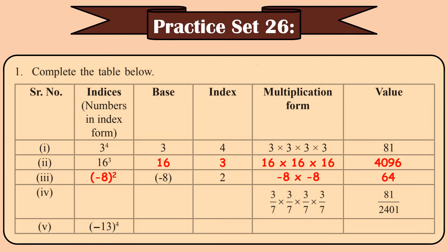Going to the next one. The index is not given, but the multiplication form is given. The fraction here is 3 upon 7 and it is multiplied 4 times, so my indices will be 3 upon 7, the whole raised to 4. My base is 3 upon 7 and my index is 4. The last one: minus 13 raised to 4. Base is minus 13, index is 4, multiplication form is minus 13 into minus 13 into minus 13 into minus 13, and the answer is 28,561.